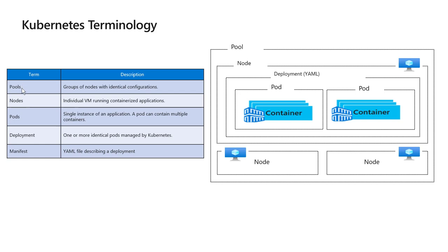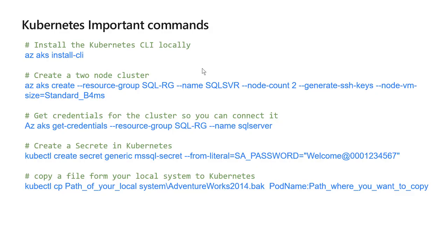Then there is a concept of node pools. A node pool is a group of nodes with identical configurations. In this demo, we are going to use some Kubernetes commands, called the Kubernetes CLI - command line interface. Before we go into the demo, let's understand these commands and how they work.